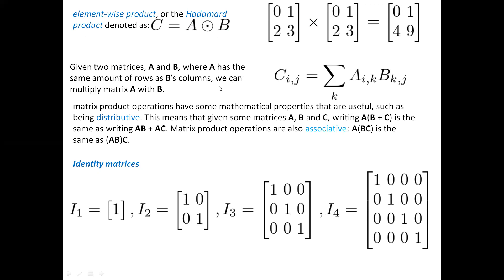Given two matrices A and B, matrix multiplication can be calculated using the formula: C_ij = summation over k from 1 to n of A_ik times B_kj, where n is the number of columns in the first matrix or the number of rows in the second matrix. Matrix product operations are distributive, meaning A times (B + C) equals A*B plus A*C.